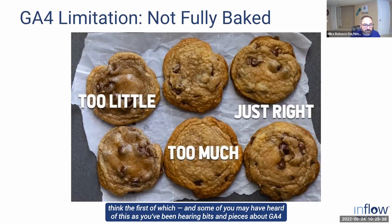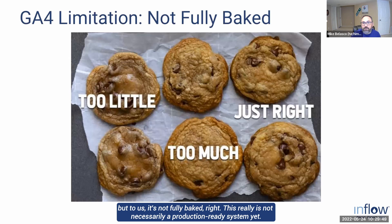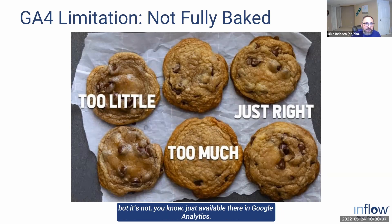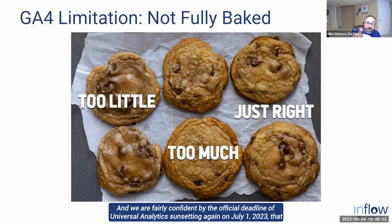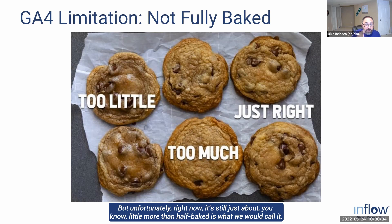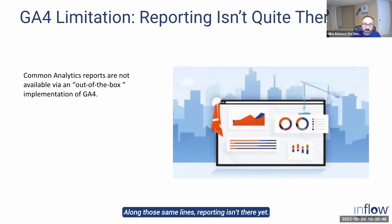There are some limitations to Google Analytics 4. First, it's not fully baked — it's not necessarily a production-ready system yet. There are still plenty of bugs and metrics that aren't available, like bounce rate, which is a pretty common metric. You can still calculate it, but it's not just available there in Google Analytics. Google is continually rolling out more features and fixing bugs, and we're fairly confident things will be a lot better by the official July 1st, 2023 deadline, but right now it's still about half-baked.